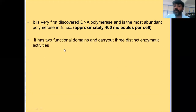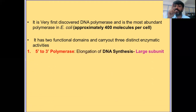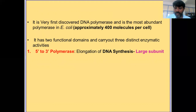E. coli DNA Polymerase I has two important domains: the N-terminal domain and the C-terminal domain. With these two domains it performs three distinct enzymatic activities. The first is 5' to 3' polymerase activity, present in the C-terminal larger domain. This activity is responsible for elongation — adding nucleotides to the 3' end of a primer and extending the DNA strand.